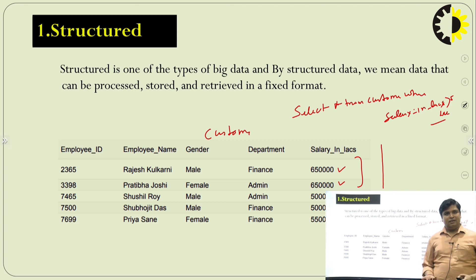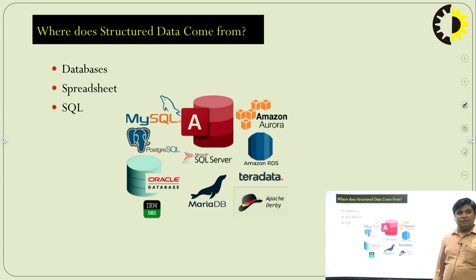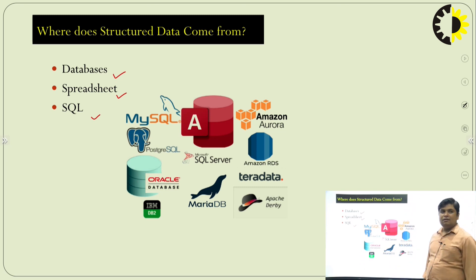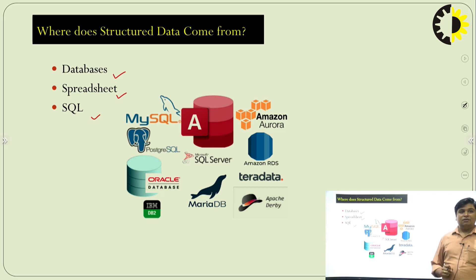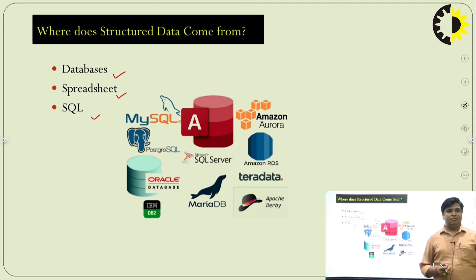Data storage is easy, data analyzing is easy, data mining is easy. Structured data comes from database tables, spreadsheets, and SQL. Some popular databases include Amazon Aurora, MySQL, which is a relational database management system, Oracle Database, and IBM DB2, which is again a relational database management system.